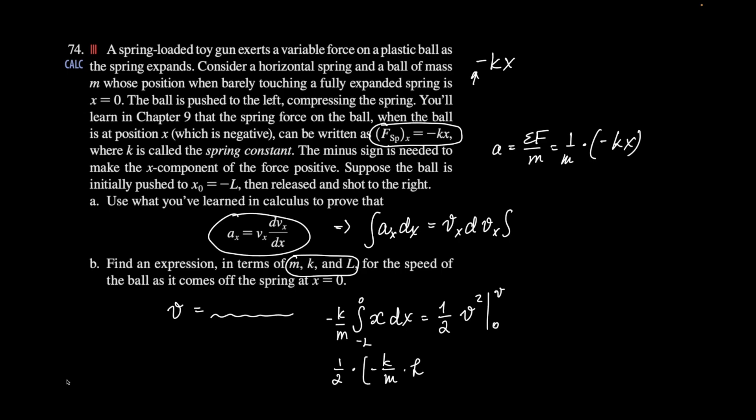l squared, not x, x squared, x squared. And that goes from negative l to 0 equals, again, 1 half v squared 0 to v.